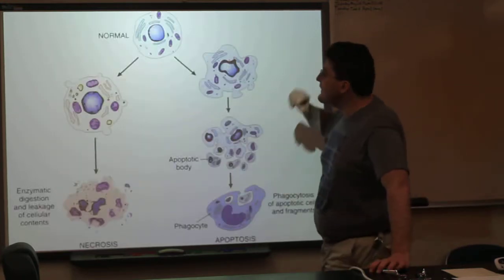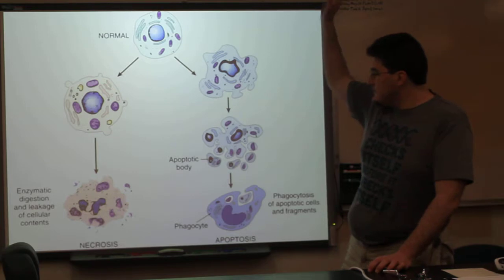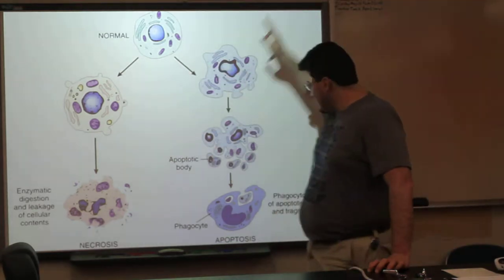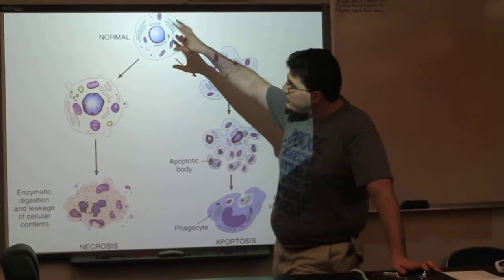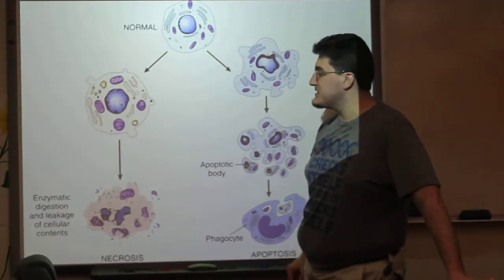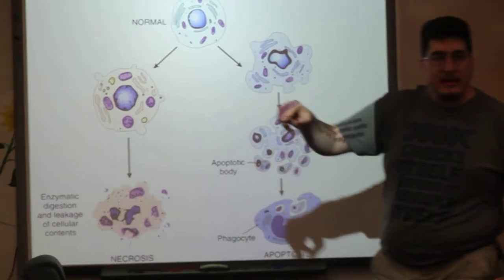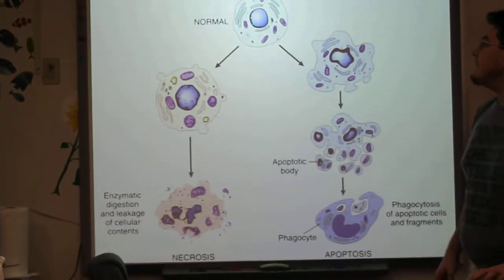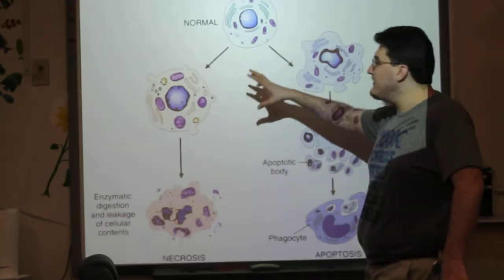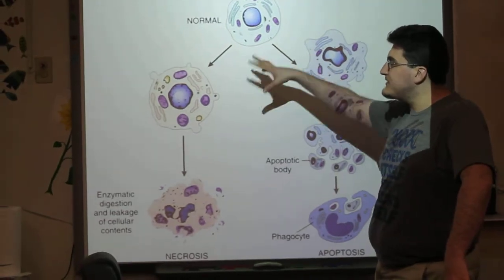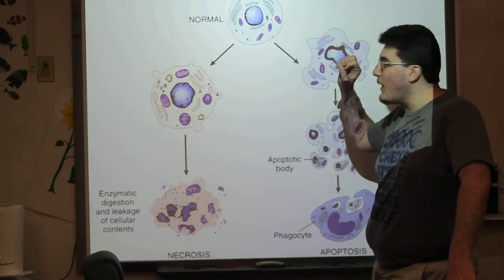In this image, we have a normal cell — down one path we have necrosis, down the other path we have apoptosis. In necrosis, some kind of injury occurs to the cell. We'll start to see these little blebs — B-L-E-B, blebs — form on the outside, and that is the signal that this cell is probably going to pop like a pimple.